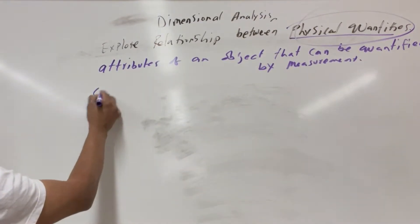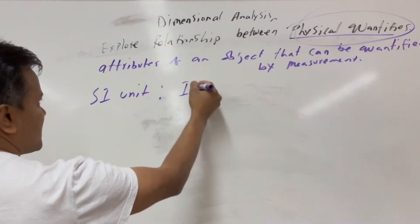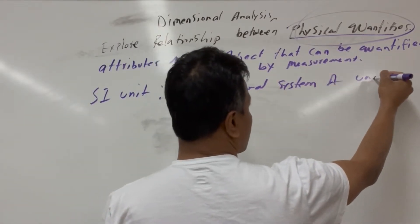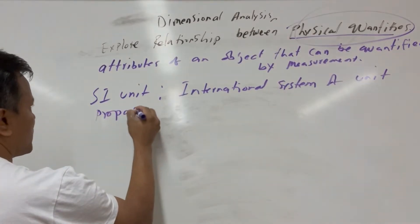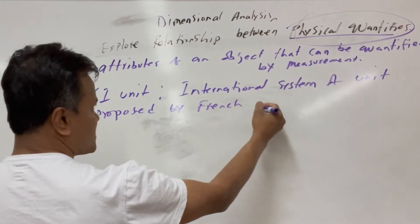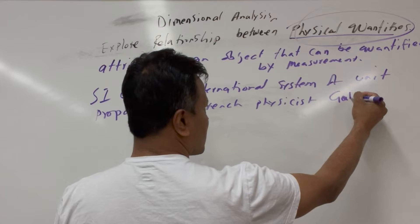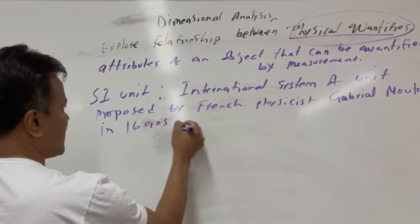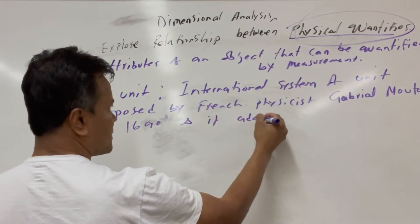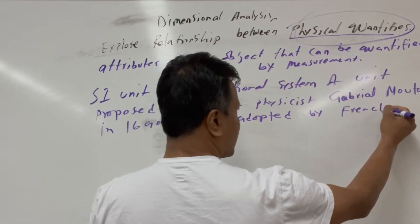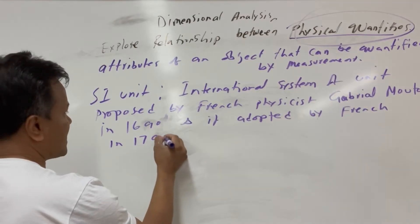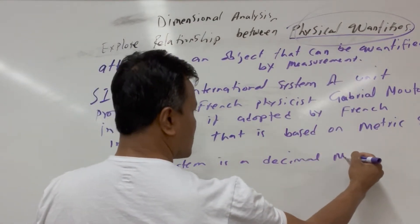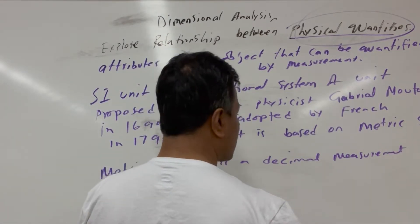When we talk about units, we are actually talking about SI units. SI unit stands for International System of Units, first proposed by a French physicist Gabriel in the 1690s. It was adopted by France and then the rest of the world in 1790. It is based on a metric system — a decimal measurement. When we talk about decimal measurement, we are talking about base 10.